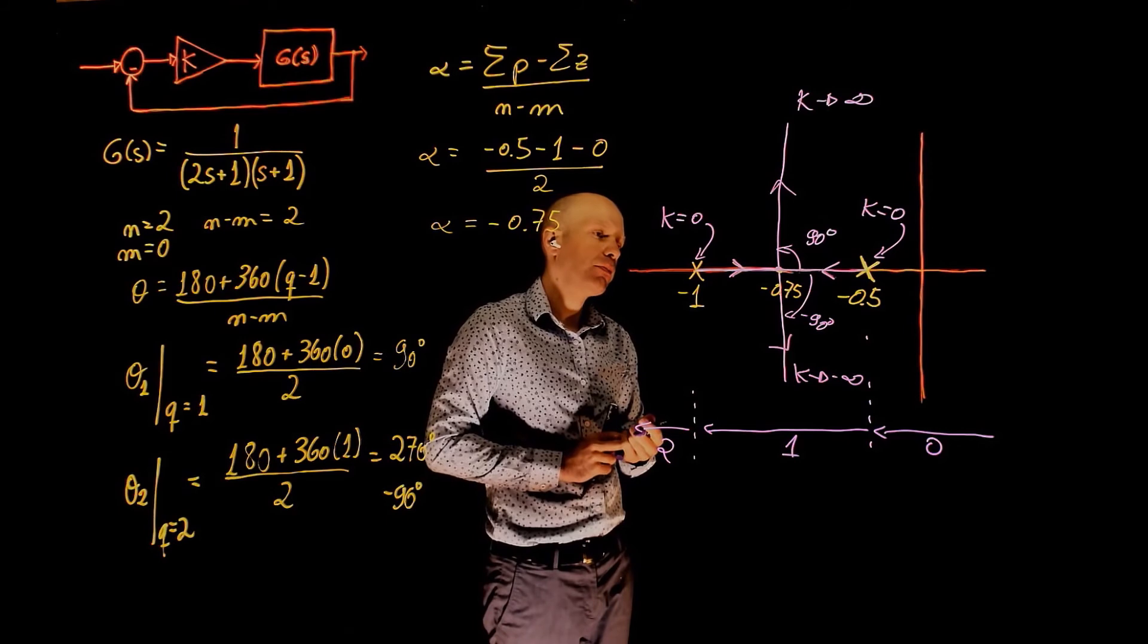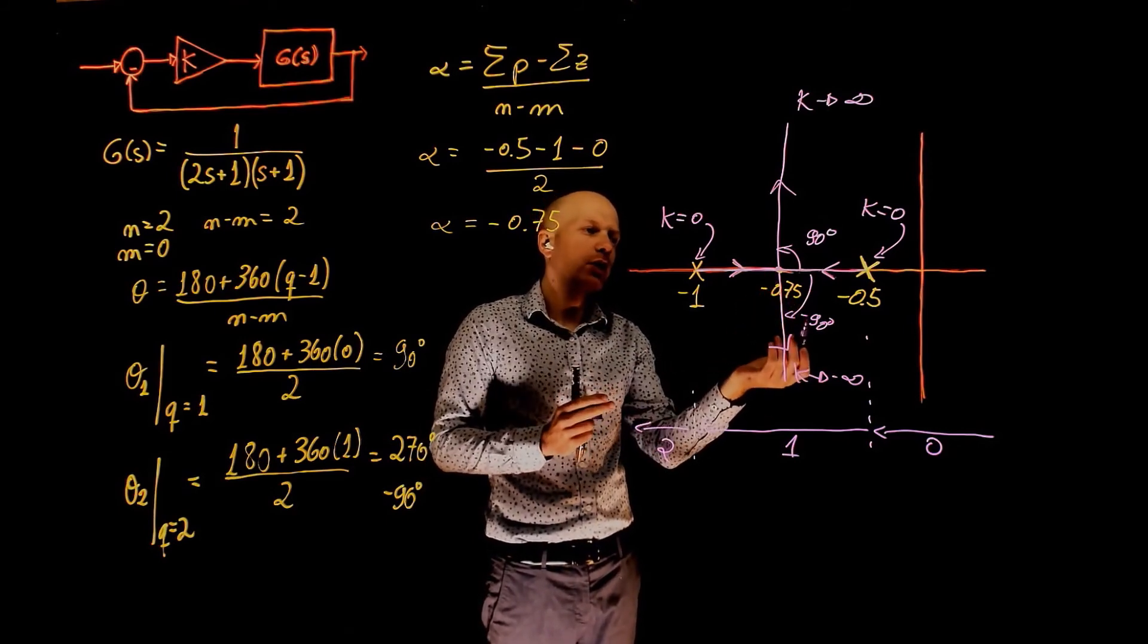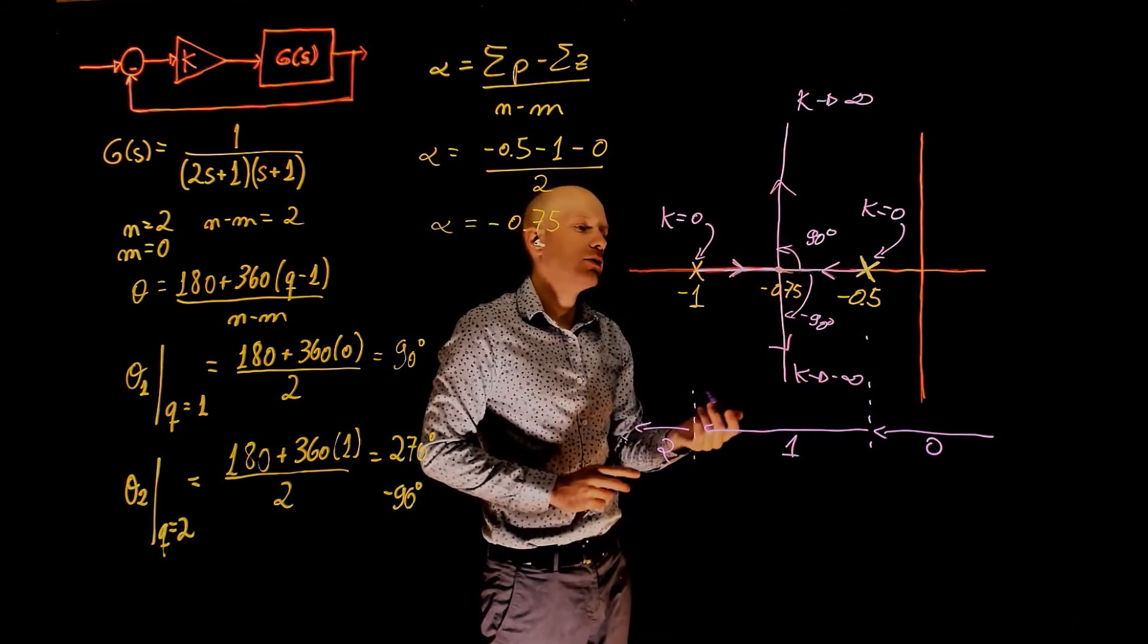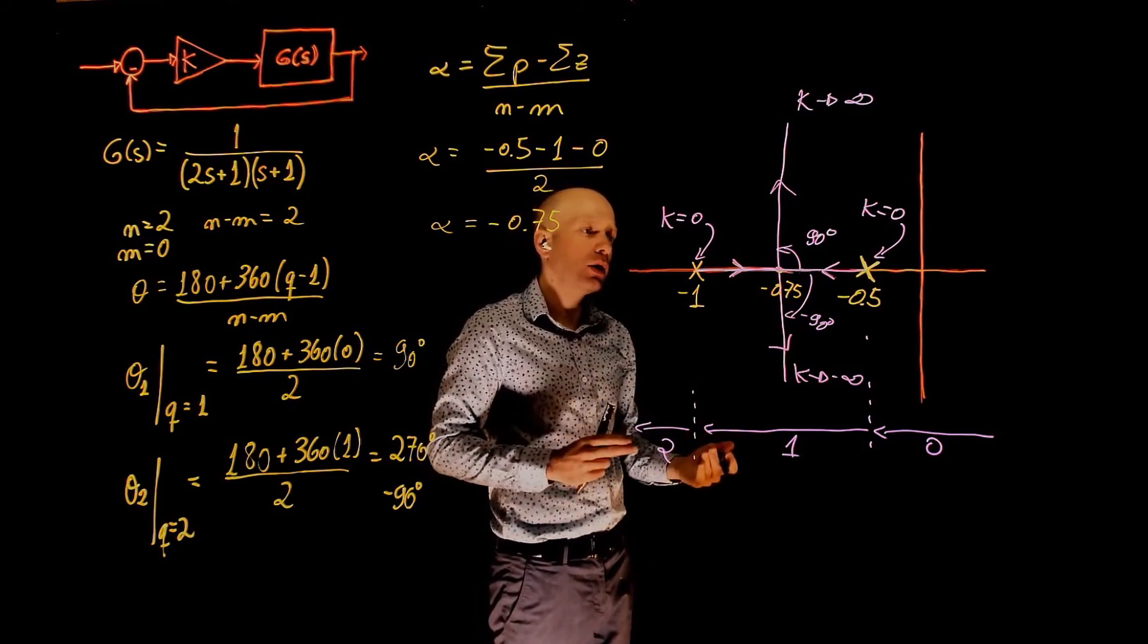The poles will come together at this point here at a given value of k that we will determine later in the following lecture, and at this point when the system is critically damped, the poles now break away from the real axis, go to plus minus infinity, but past this point the system is now under-damped.